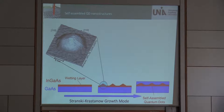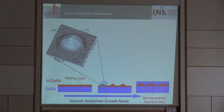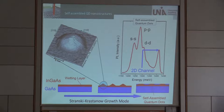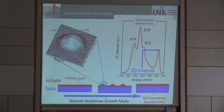Self-assembled quantum dots are semiconductor heterostructures fabricated from two optically active semiconducting materials — gallium arsenide and indium gallium arsenide — which have slightly different lattice constants. When you deposit InGaAs on a GaAs wafer, you first get a two-dimensional layer, and at a critical thickness island formation becomes energetically favorable. You get lens-shaped objects embedded in a GaAs matrix with a higher band gap that confines both electrons and holes. These dots also come with a two-dimensional wetting layer — a quantum well — important for acoustoelectric effects.